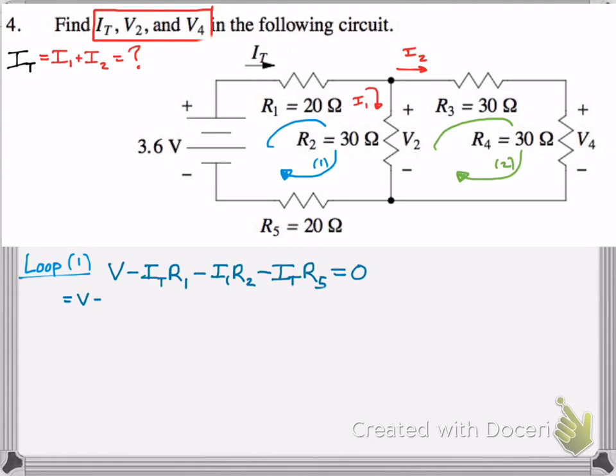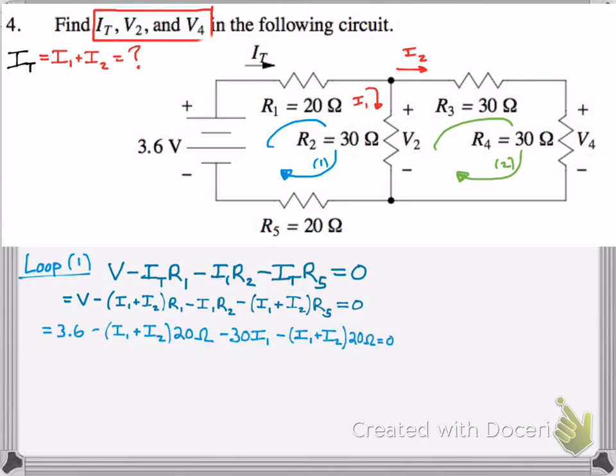And then what is IT? So you just, since we defined it as I1 plus I2, I simply put that in there, and then you do the same thing for the I total over there. Now we set up our equation, simply plug in the numbers. This is just a long mathematic arithmetic process, so we're just going to kind of plug the numbers in. So R1 is 20, for example, R2 is 30. So we keep going, and finally we get our first equation by combining like terms.